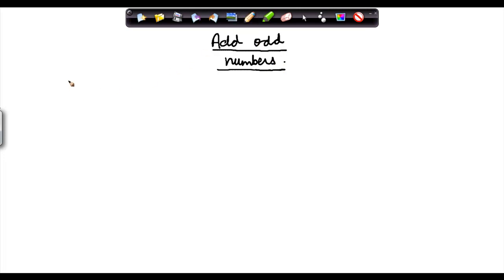Now, we all know what the odd numbers are: 1, 3, 5, 7, 9, 11, 13, 15, and 17, right?